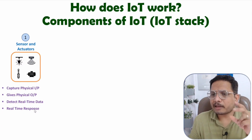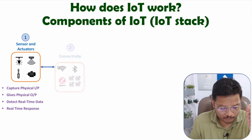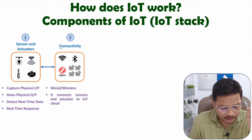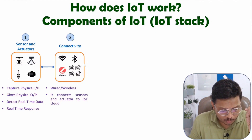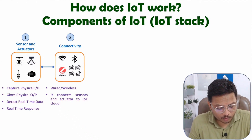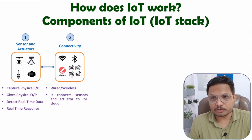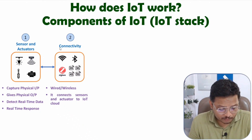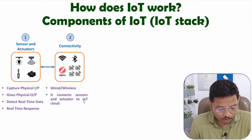The second component is connectivity. We need to interface sensors and actuators with the IoT ecosystem, and to do that, you need connectivity. This connectivity can be either wired or wireless. There are various types of protocols available — for example, Wi-Fi, Bluetooth, ZigBee, and cellular protocols like 2G, 3G, 4G, and 5G. This connectivity component connects the sensors and actuators to the IoT cloud.